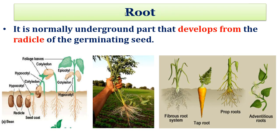The first plant organ to be studied is root. It is normally the underground part that develops from the radicle of the germinating seed. There are two types of root system: true and false. To understand the true root system, look at the seed germination process. A germinating seed forms two appendages — plumule and radicle. Plumule gives the shoot and radicle gives the root. The true root system is only that which is formed from the radicle, and this radicle gives rise to a tap root system.